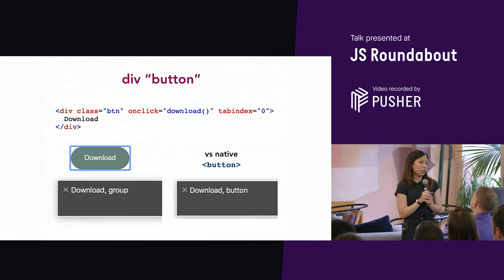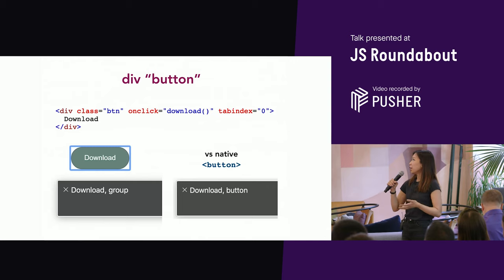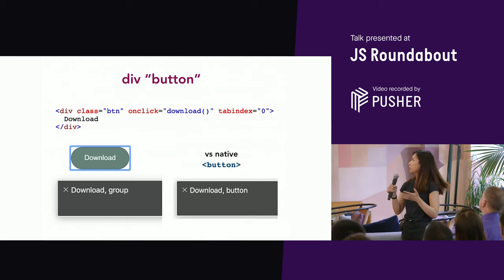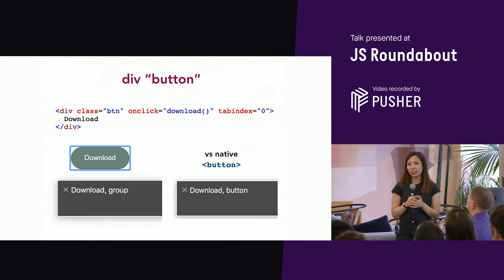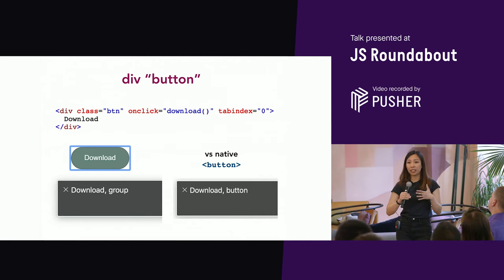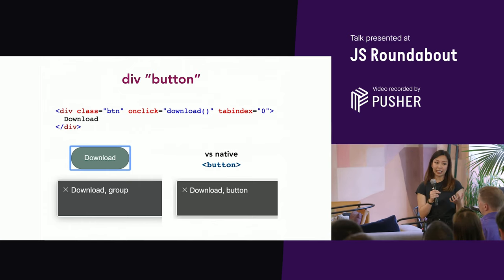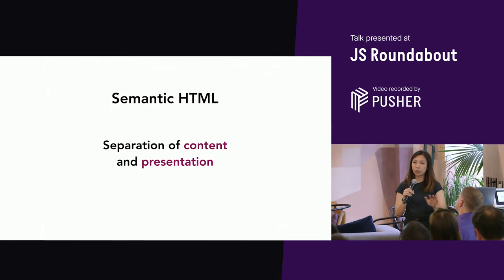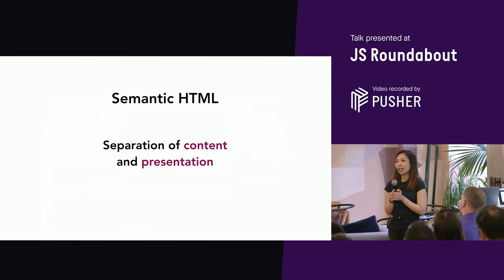It's easy to reach for a div because it's generic and like a blank canvas, but divs have no semantic meaning. If a screen reader comes across a div it doesn't know what it's about. For example, a button made with a div — even if tab index is set to make it focusable — will be read out as 'download group' instead of 'download button.' Does 'group' sound interactive to you? A screen reader user may get confused and just miss it because it doesn't sound like something they can click.